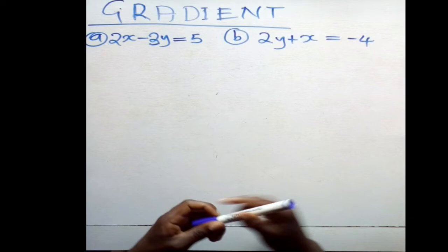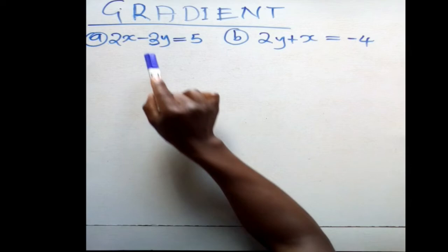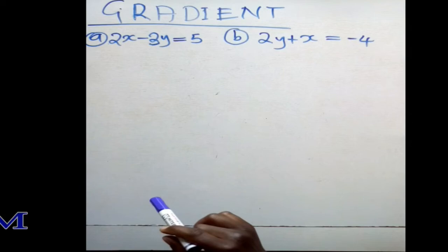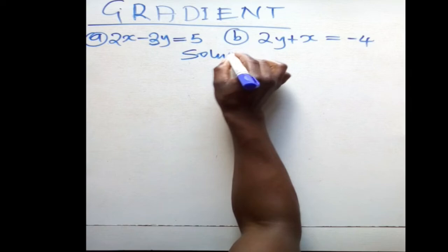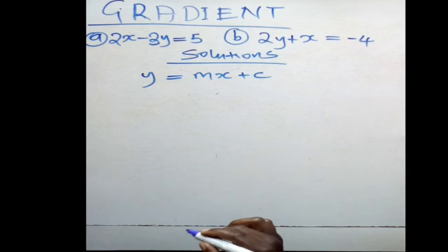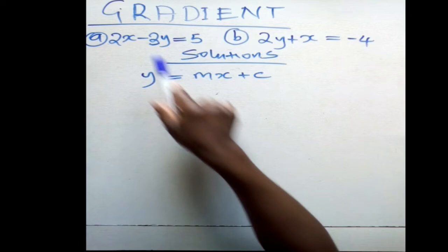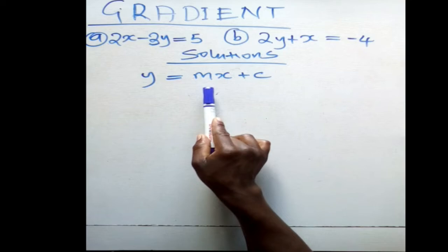On the solving board, we are asked to find the gradient of each of two equations. To do that, always remember that the general equation of a straight line is y = mx + c. You must write the given equation in this form, making y the subject of the formula. The coefficient of x is the gradient — in short, m is the gradient.